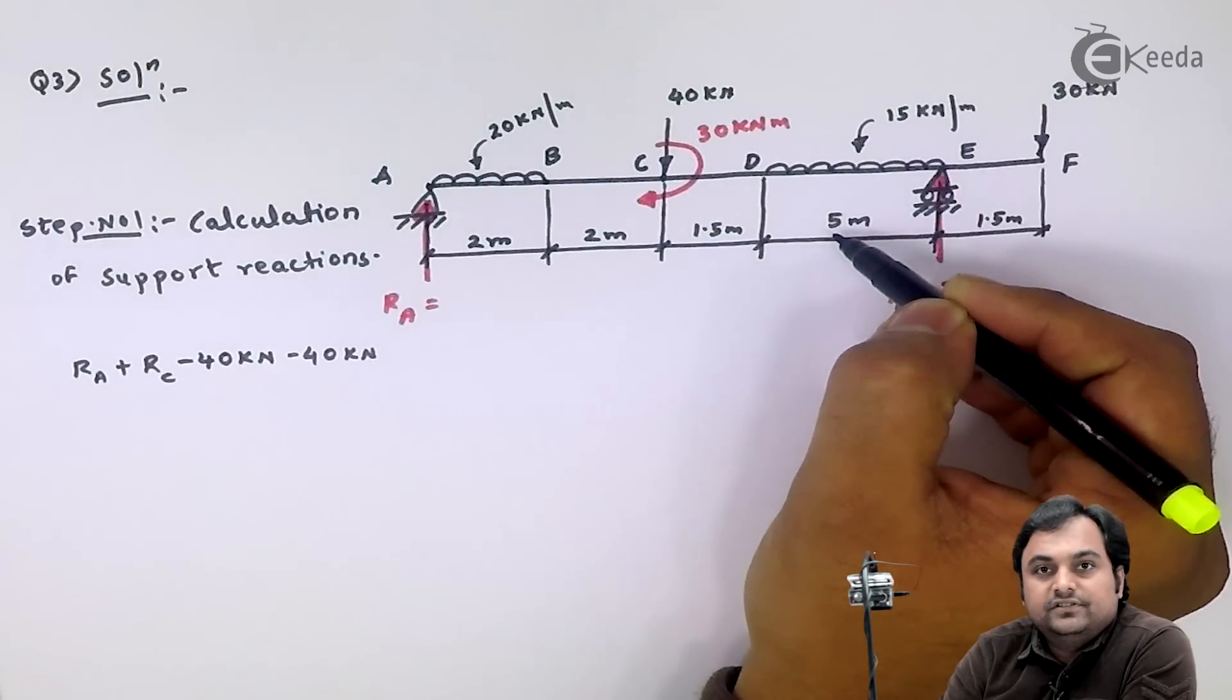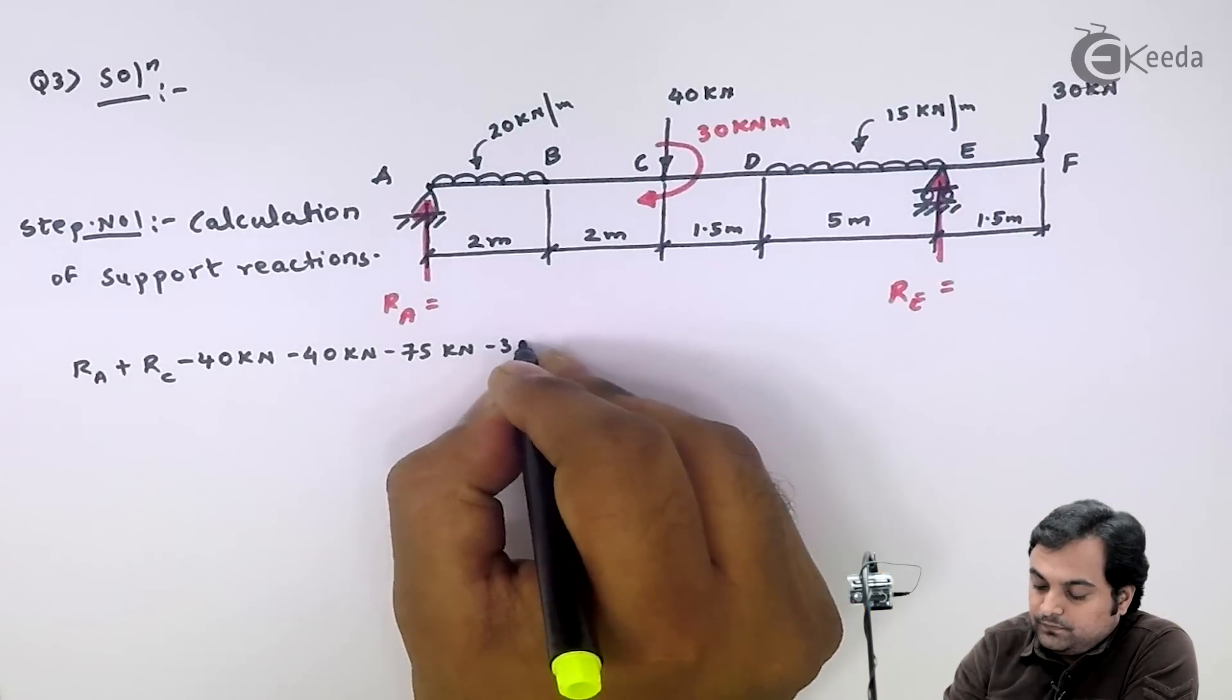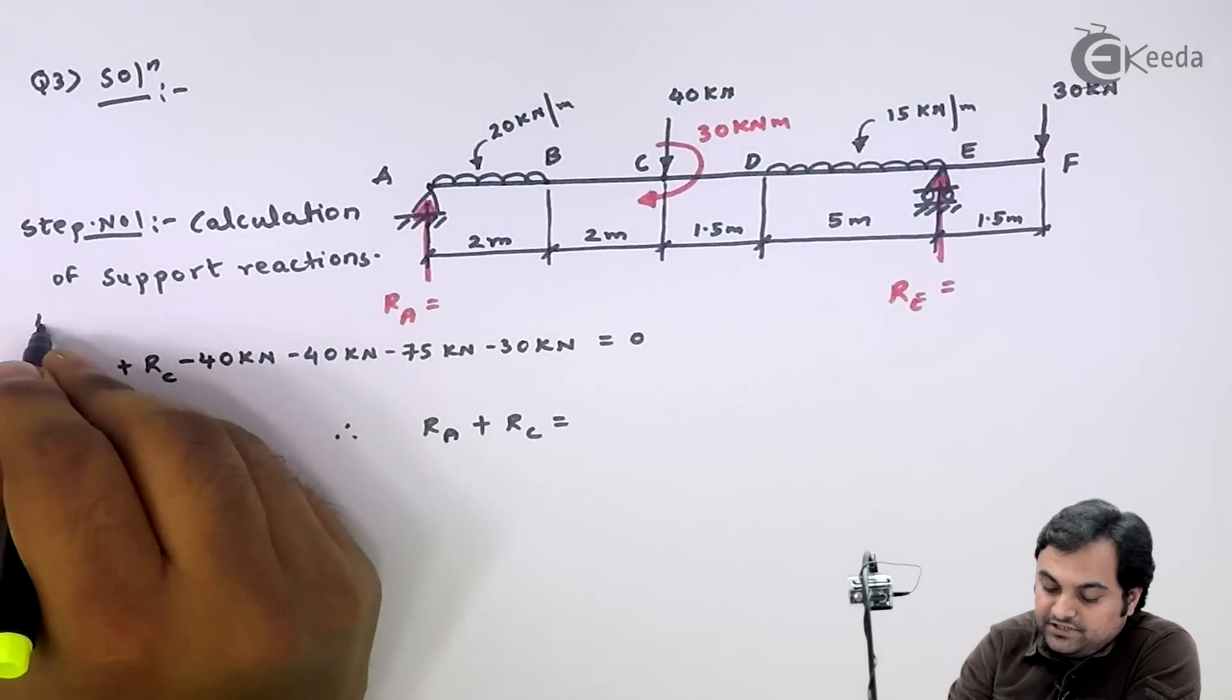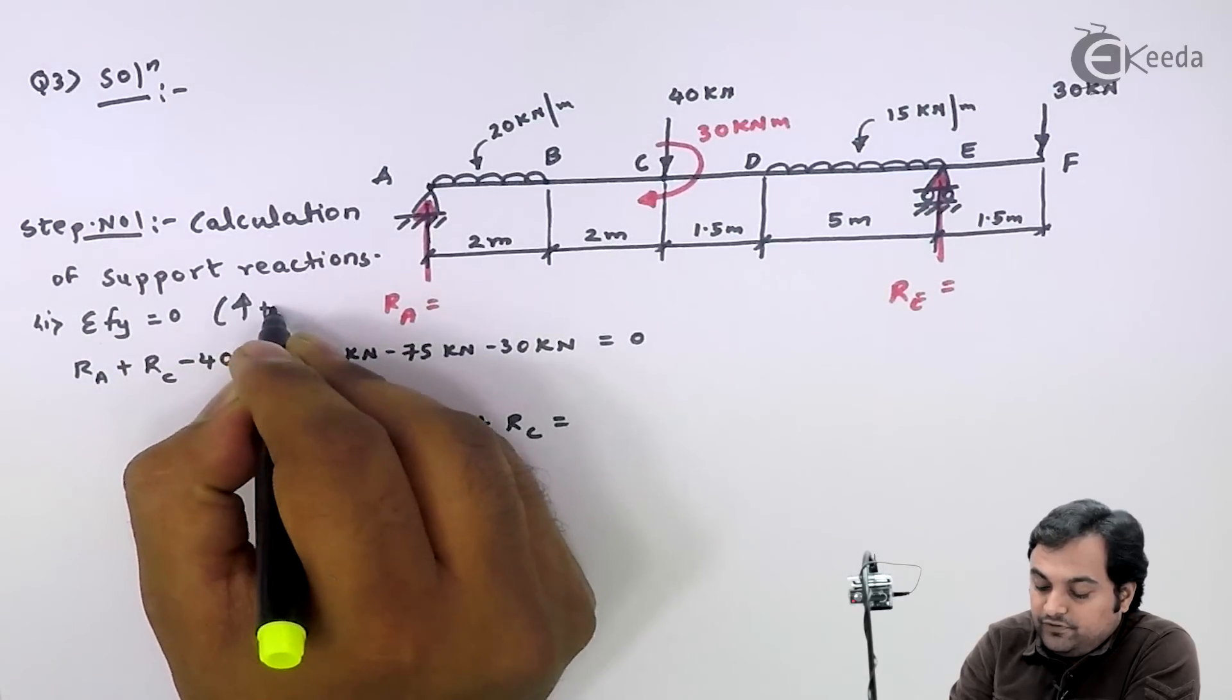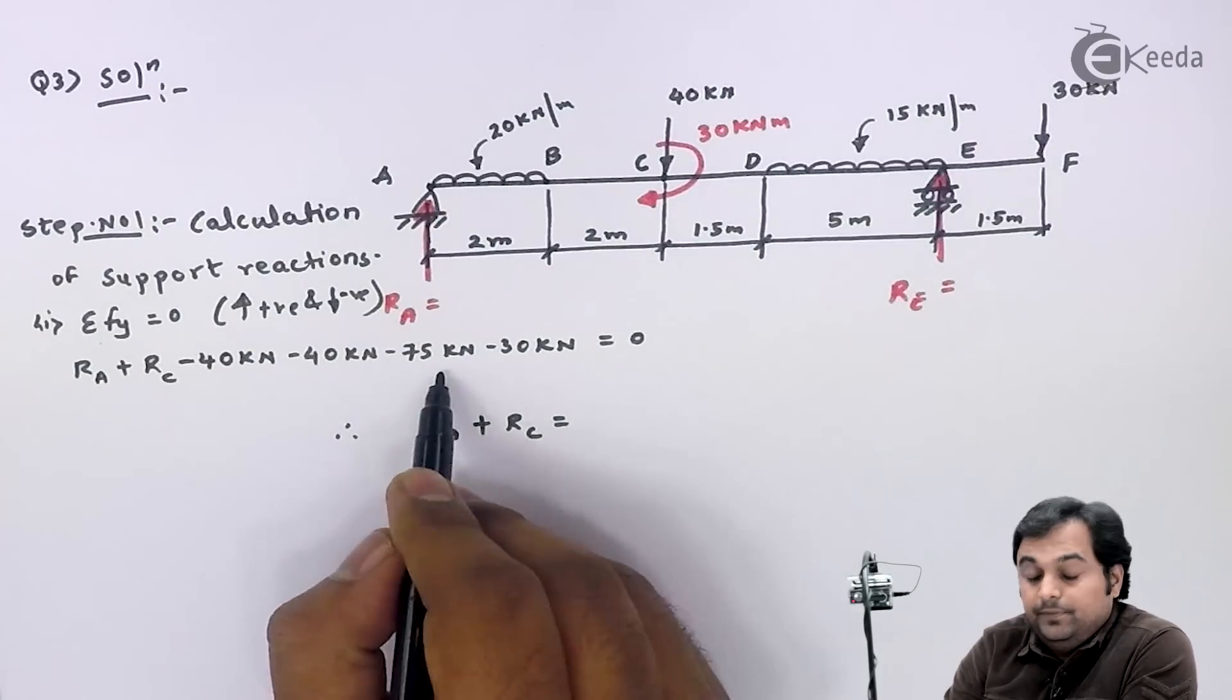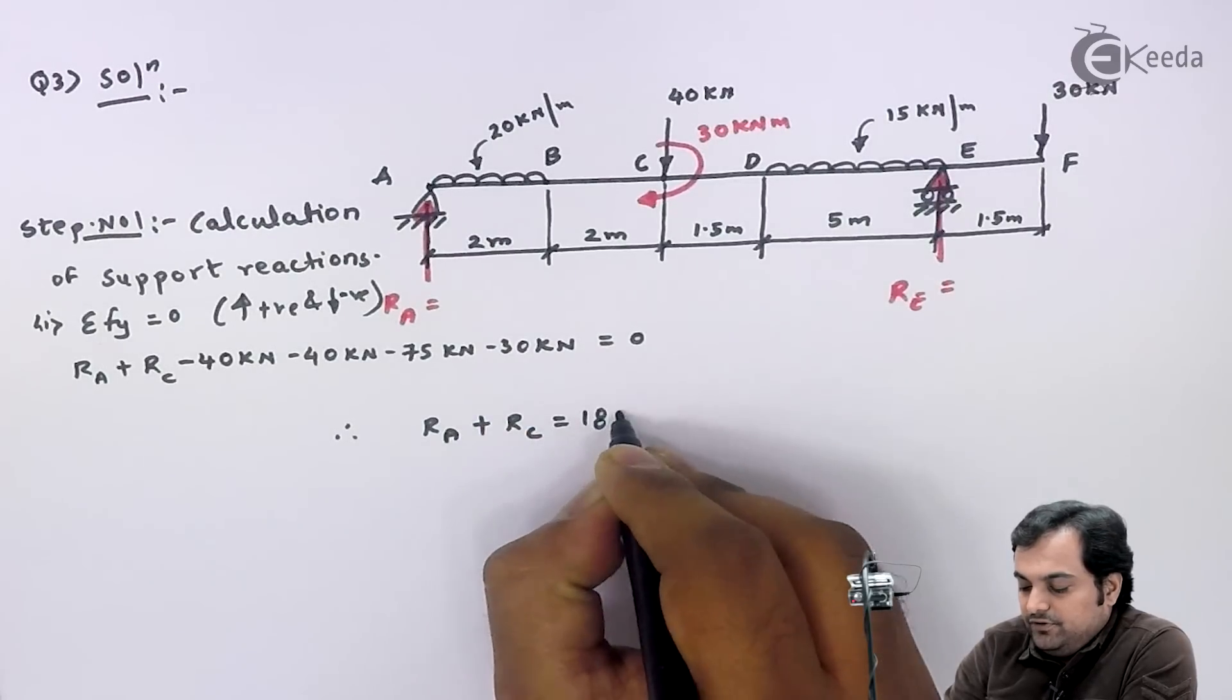Next, 15 into 5 is 75 in the downward direction, so minus 75 kilonewton, and here I have 30 kilonewton equals 0. Therefore RA plus RE equals—this is summation of Fy equals 0, upward force positive and downward force negative. Minus 80 minus 75 becomes 155, and adding 30 gives minus 185. Shifting to the other side, it's plus 185 kilonewton, equation number one.